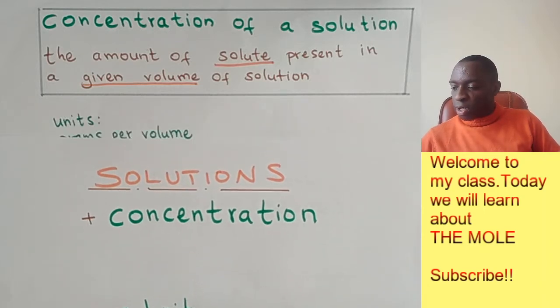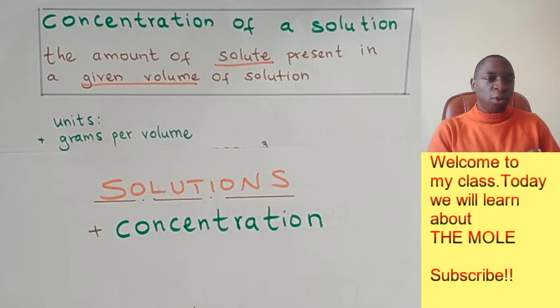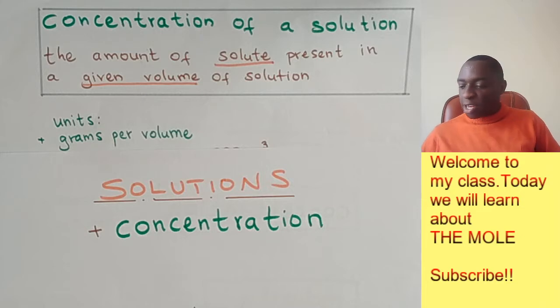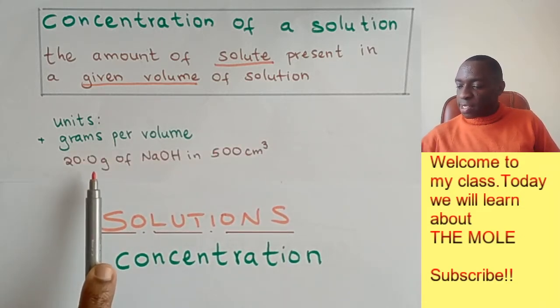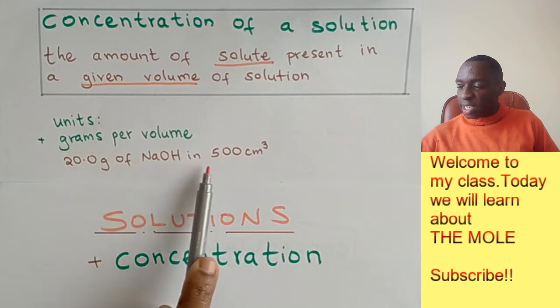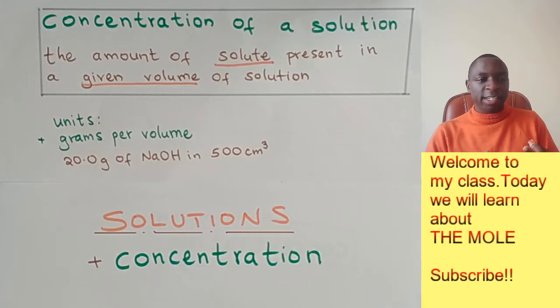So the units that you're going to use is grams per volume. So you measure the amount of solute in terms of grams and the volume of solvent in terms of maybe cubic centimeters. And you end up with something like 20.0 grams of sodium hydroxide in 500 cubic centimeters. So this is the concentration of sodium hydroxide. And it is very specific.